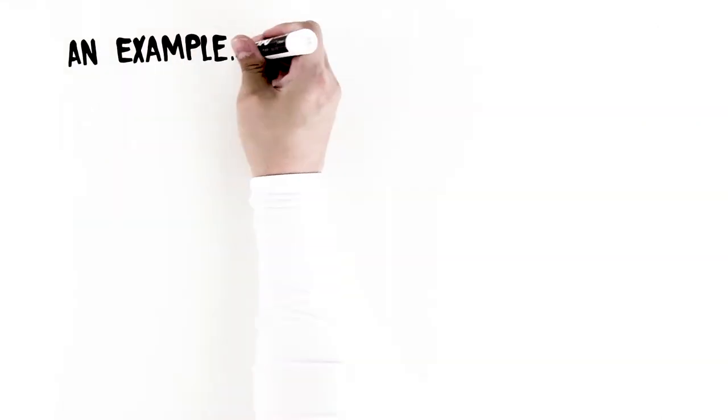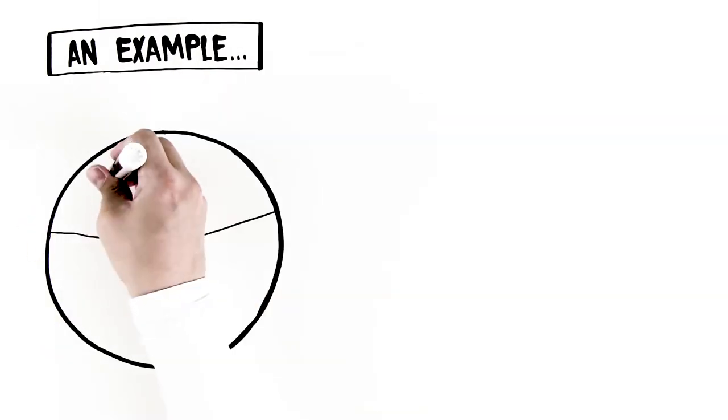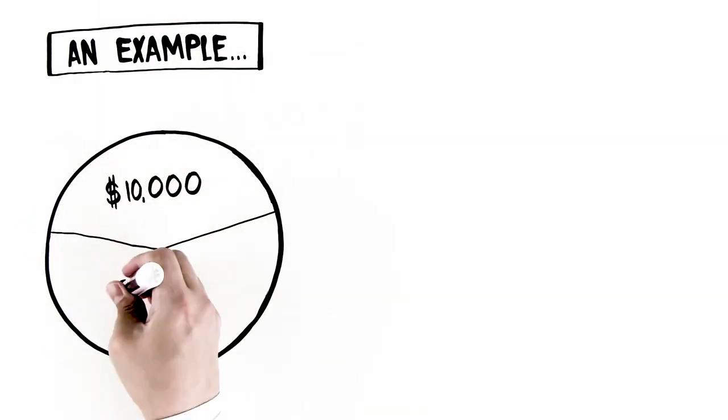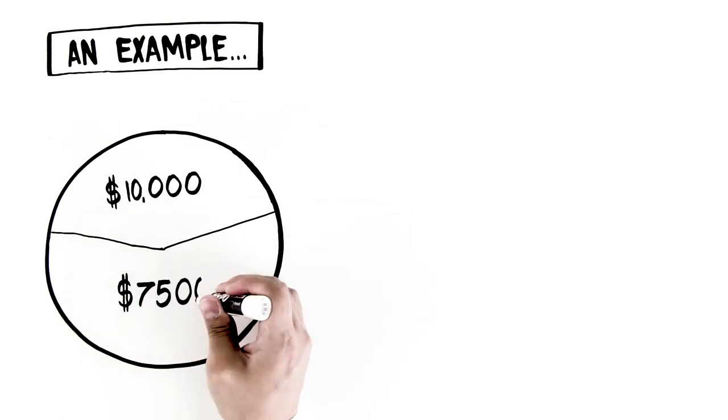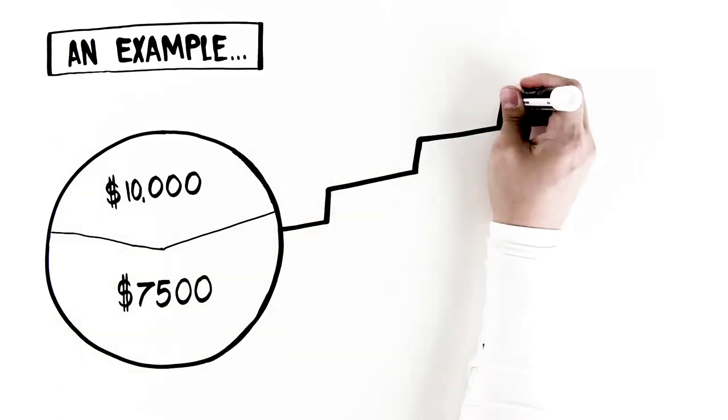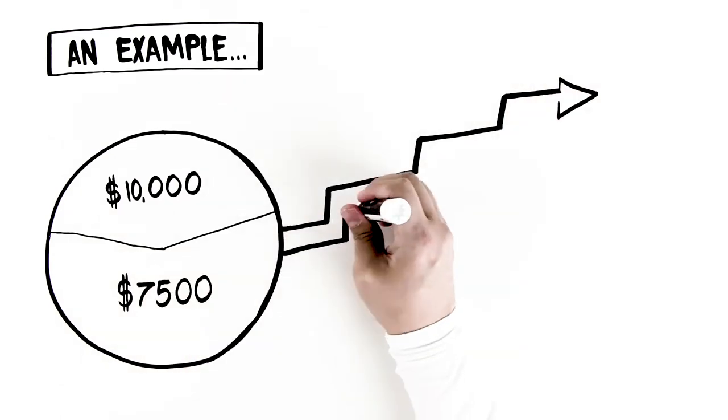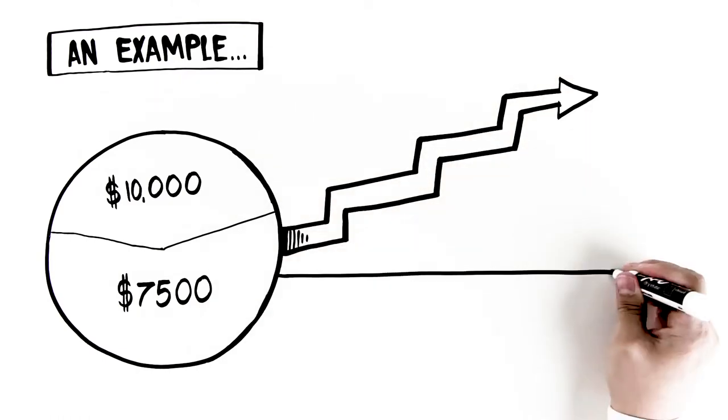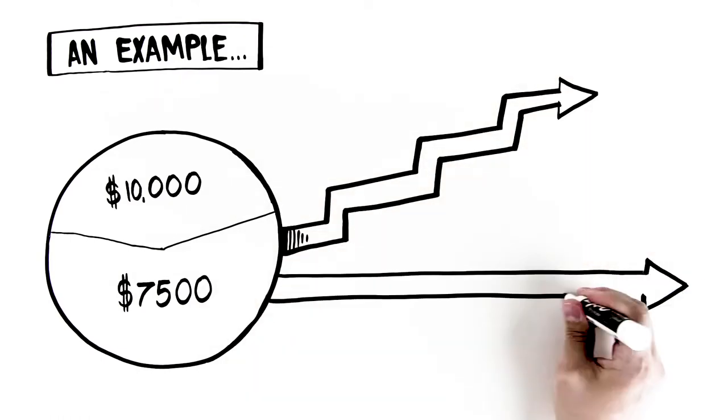Here's an example. If in the first year of your policy you pay a premium of $10,000, $7,500 goes towards cash value, and you're able to borrow against this. As you continue to pay premiums each year, cash value increases.